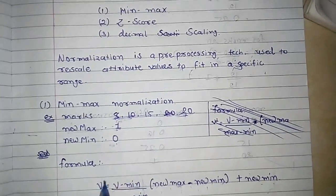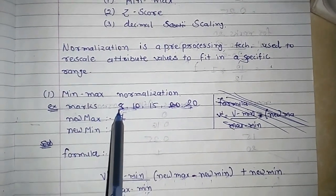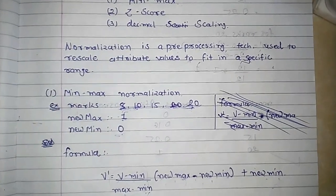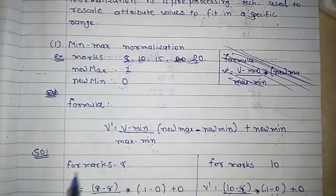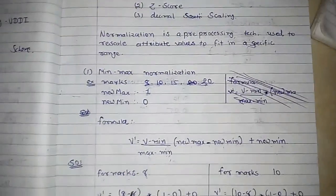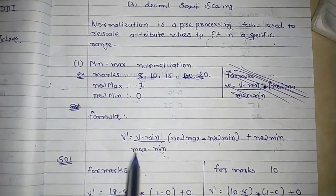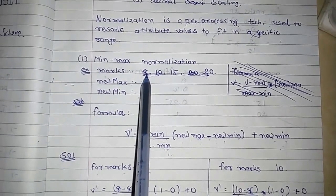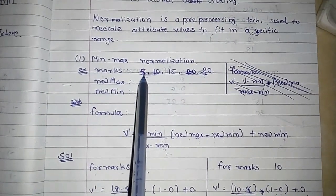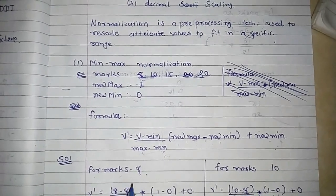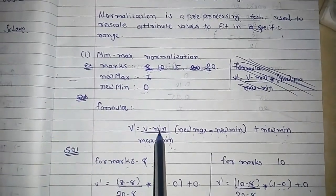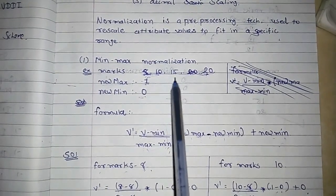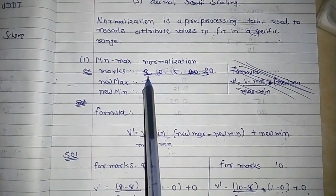We have to take all the values from the marks attribute one by one and solve each example. For marks = 8, V is equal to 8. We need to find the minimum value from the data, which is 8.